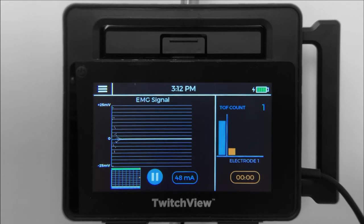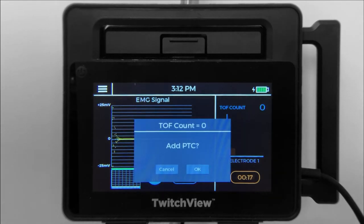If OK is selected, the system will automatically transition between TRAIN-4 and post-TATANIC count modes according to the patient's level of paralysis for the duration of the case. If CANCEL is selected, the monitor will remain in TRAIN-4 mode.